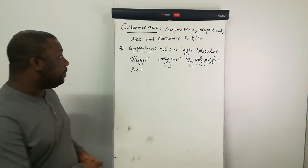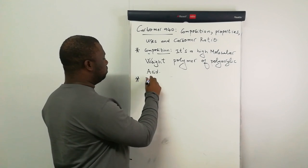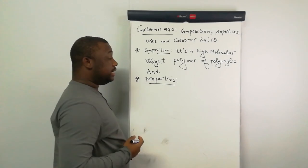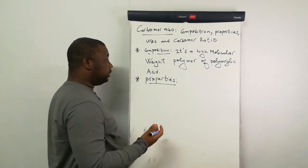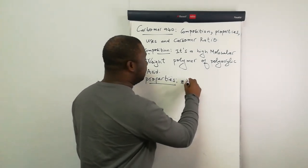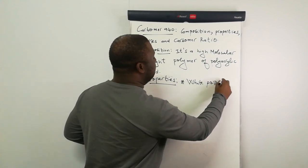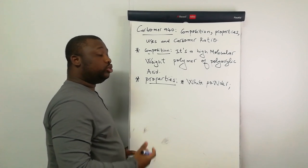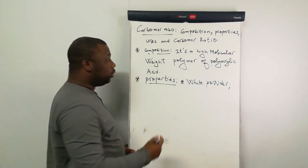Now in terms of properties, let's talk of the properties. It has many properties, let's at least take two of them. Physical properties: first one, it's a white powder in terms of appearance, and one more particular thing, it produces high viscosity when dissolved into a liquid.